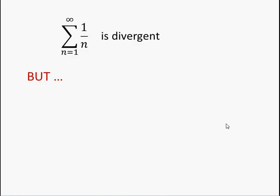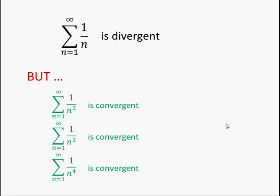So, the harmonic series is divergent. That's really interesting, especially when you compare it to these ones, which are convergent. And the alternating harmonic series is also convergent.